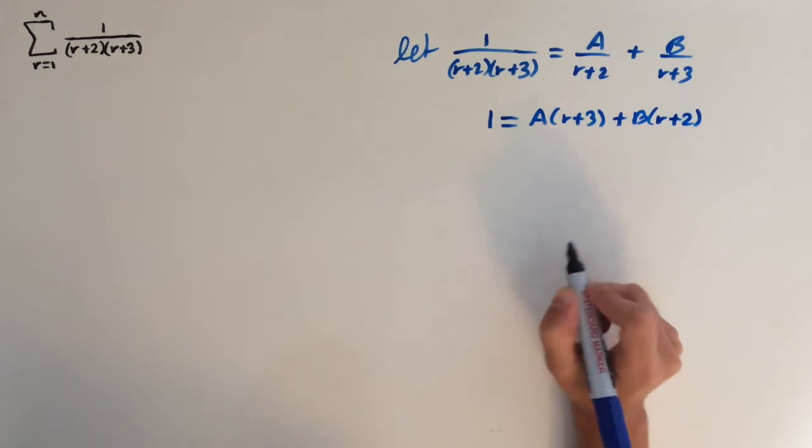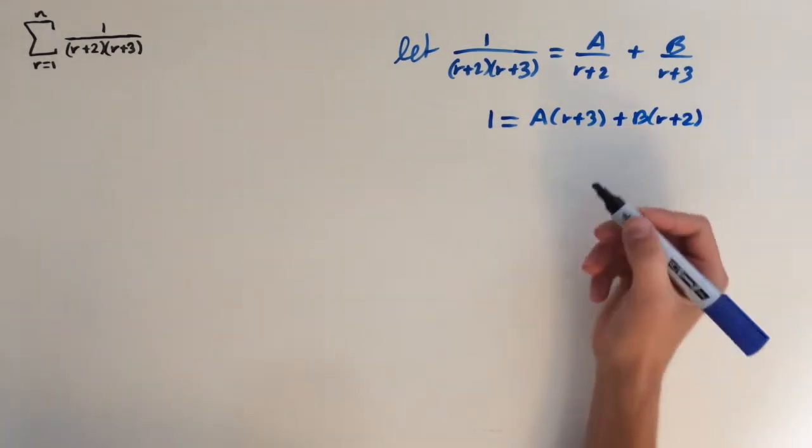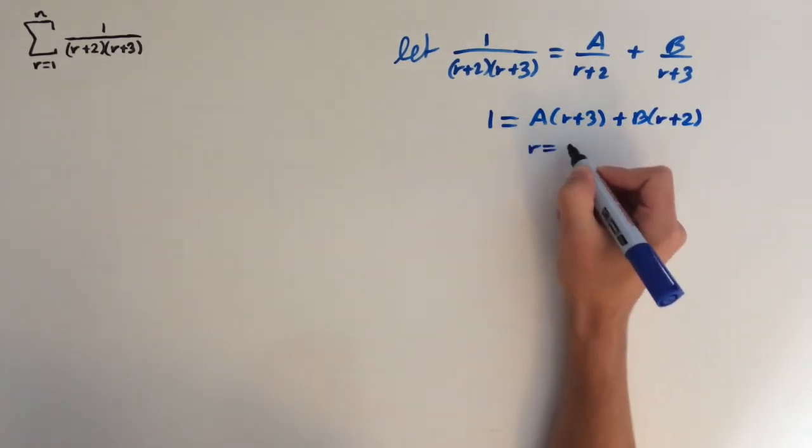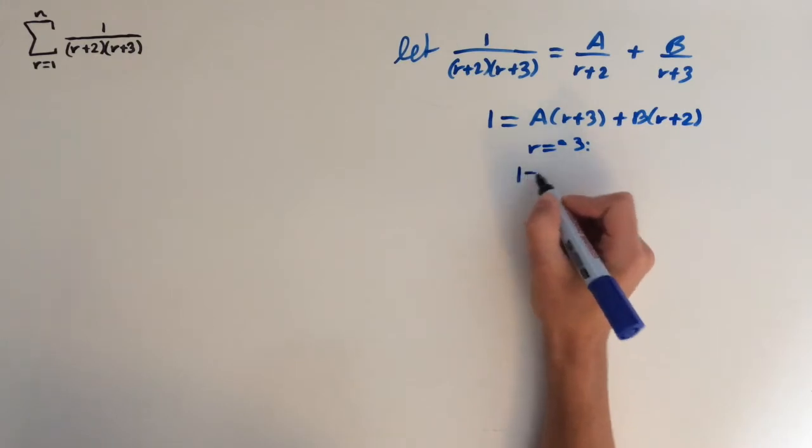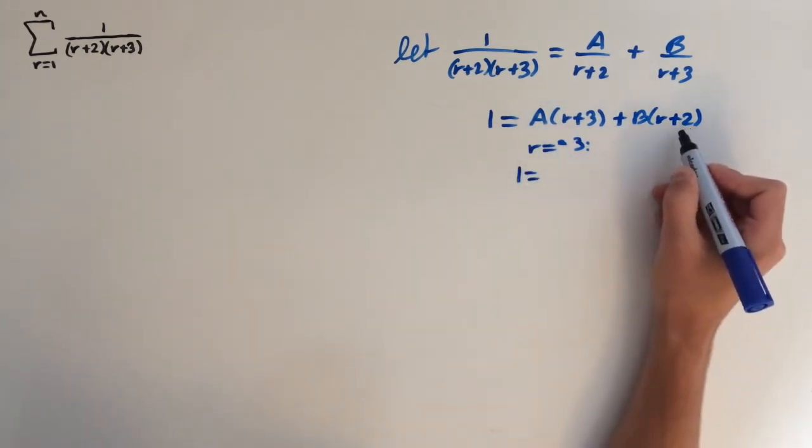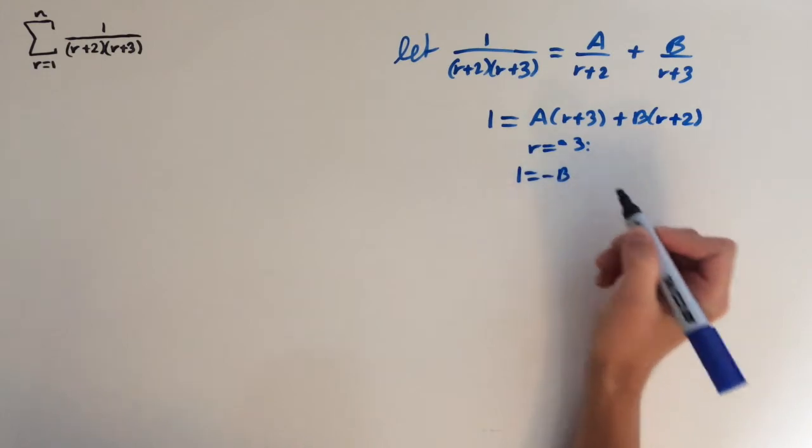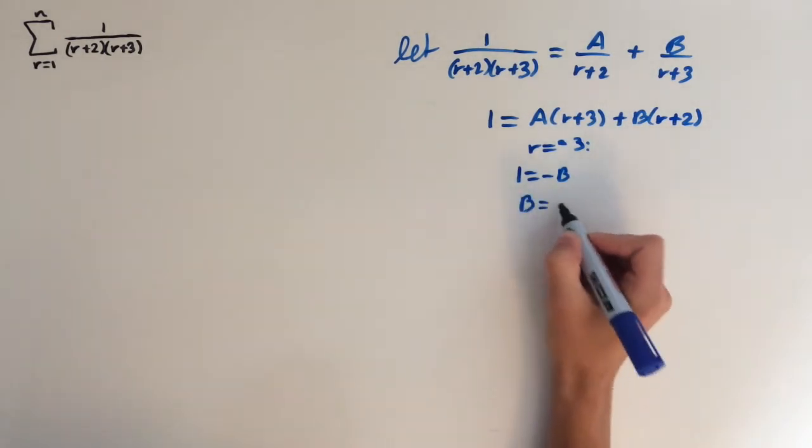So now we need to input values of r to evaluate this. So if we take r equals minus 3, this bracket right here is going to equal 0. So we're going to be left with 1 equals minus 3 plus 2. That's minus 1. So 1 equals minus b, which means that b equals minus 1.